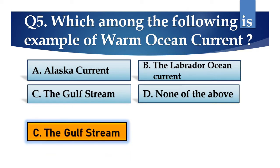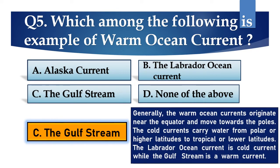Answer is C. The Gulf Stream. Generally, the warm ocean currents originate near the equator and move towards the poles. The cold currents carry water from polar or higher latitudes to tropical or lower latitudes. The Labrador Ocean current is a cold current while the Gulf Stream is a warm current.